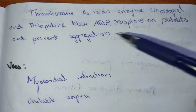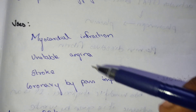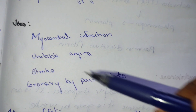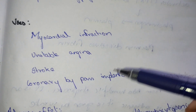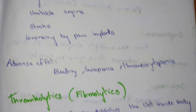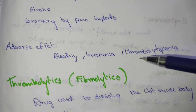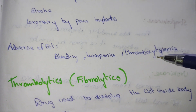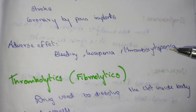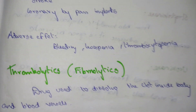These drugs are used in myocardial infarction, unstable angina, stroke, as well as coronary bypass implants. The adverse effects of these drugs are bleeding, leukopenia, and thrombocytopenia.